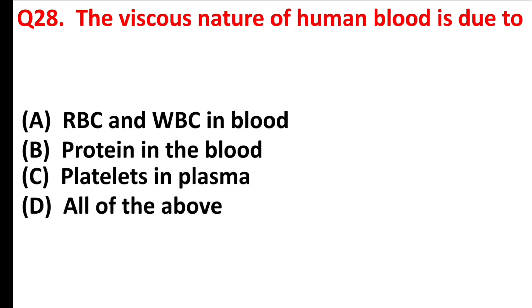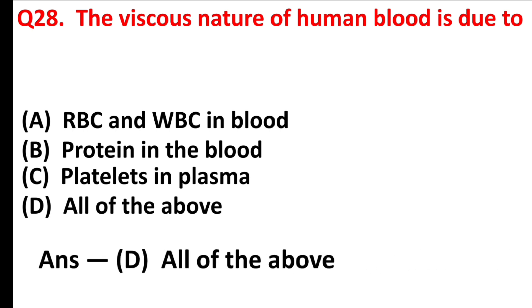The viscous nature of human blood is due to? Answer is Option D: All of the above — meaning RBCs and WBCs in blood, proteins in the blood, and platelets in plasma.